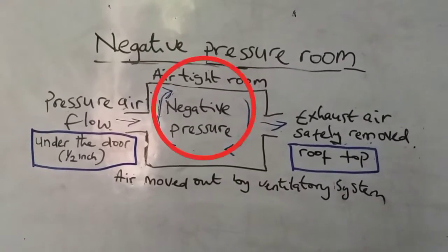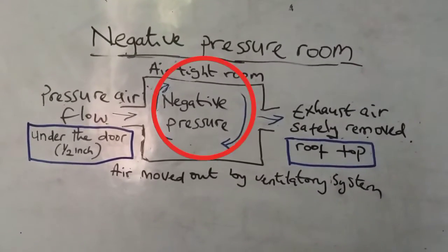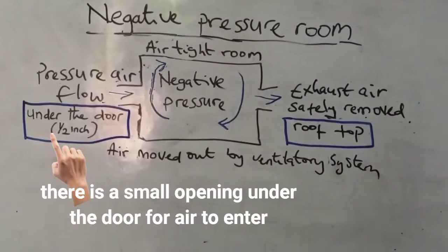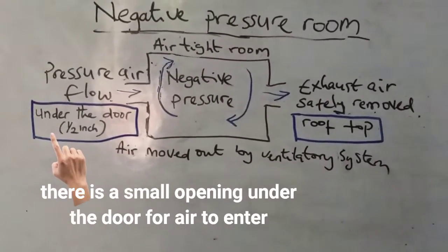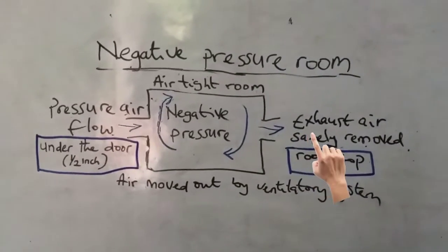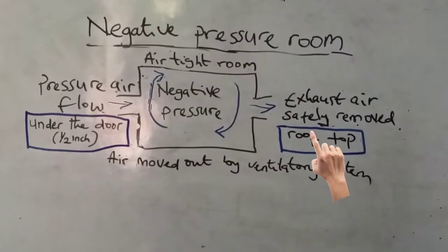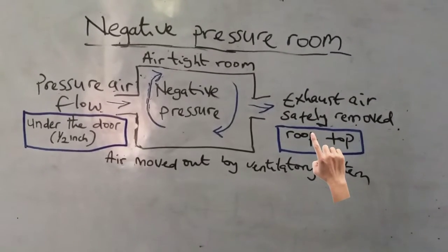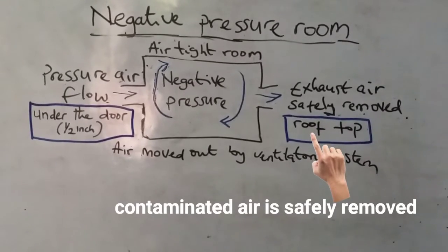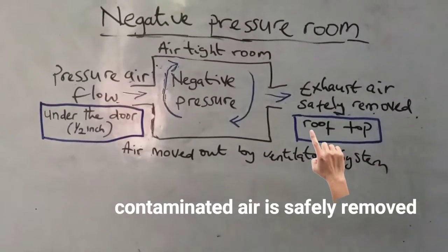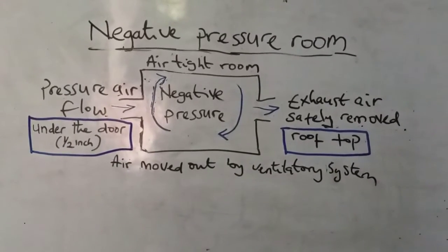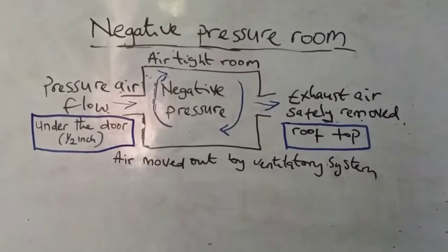As you can see here, the negative pressure room is an airtight room with indoor seals, and the other rooms are also airtight. Air is moved out by the ventilatory system through a special outlet where the exhaust air is safely removed — it could be at the rooftop, where ultraviolet rays treat the contaminated air. The air outlet is located so that it will not be exposed to people or other occupied spaces.